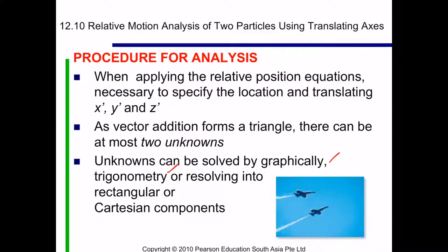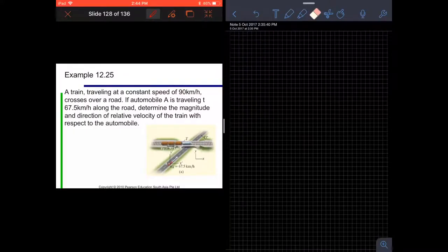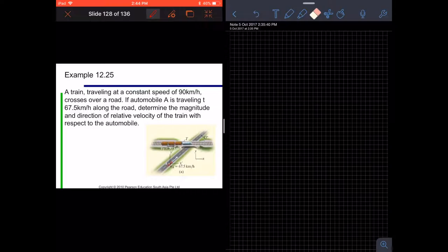In this example, a train traveling at a constant speed of 90 km/h crosses over a road. If automobile A is traveling 67.5 km/h along the road, determine the magnitude and direction of relative velocity of the train with respect to the automobile.